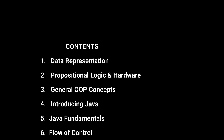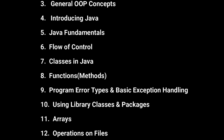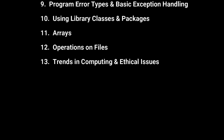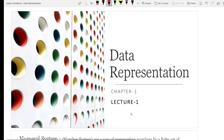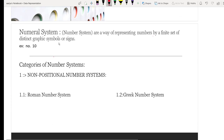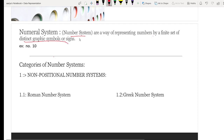In this video lecture series you will learn the entire syllabus of Class 11th Computer Science with Java, Chapter 1: Data Representation, Lecture 1 — Numeral System. A numeral system, or number system, is the way of representing numbers by an infinite set of graphic symbols and signs. Graphic symbols means 0, 1, 2, and so on.